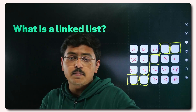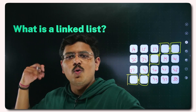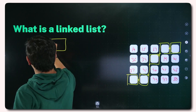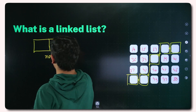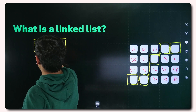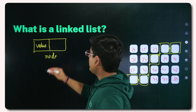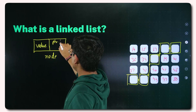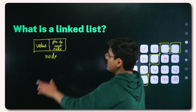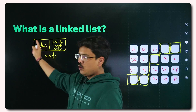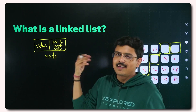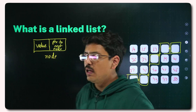You will never know the need of linked list if you don't understand arrays first. So now let's understand what a node is. A node has two portions: one is the value portion, and the other is a pointer to the next node — it holds the address of the next node.